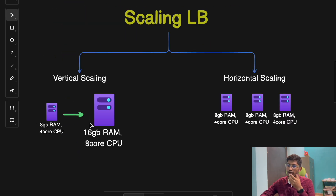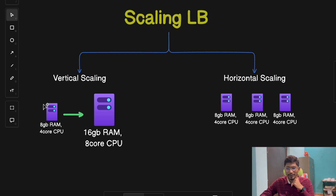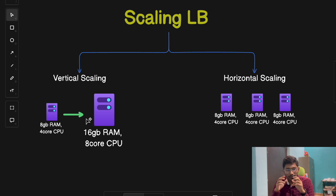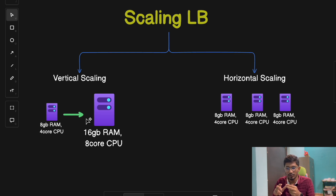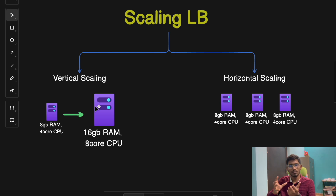To handle more traffic, load balancers themselves can be scaled vertically or horizontally. Vertical scaling means upgrading the power of the load balancer by adding more resources like CPU or memory. For example, increasing the RAM of the load balancer from 8 GB to 16 GB, and the CPU from 4 cores to 8 cores — that is vertical scaling. Basically, you are increasing the capacity of your existing load balancer instance.